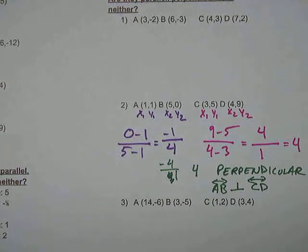Negative 1 fourth and 4 are negative reciprocals. So that tells us that the lines are perpendicular.